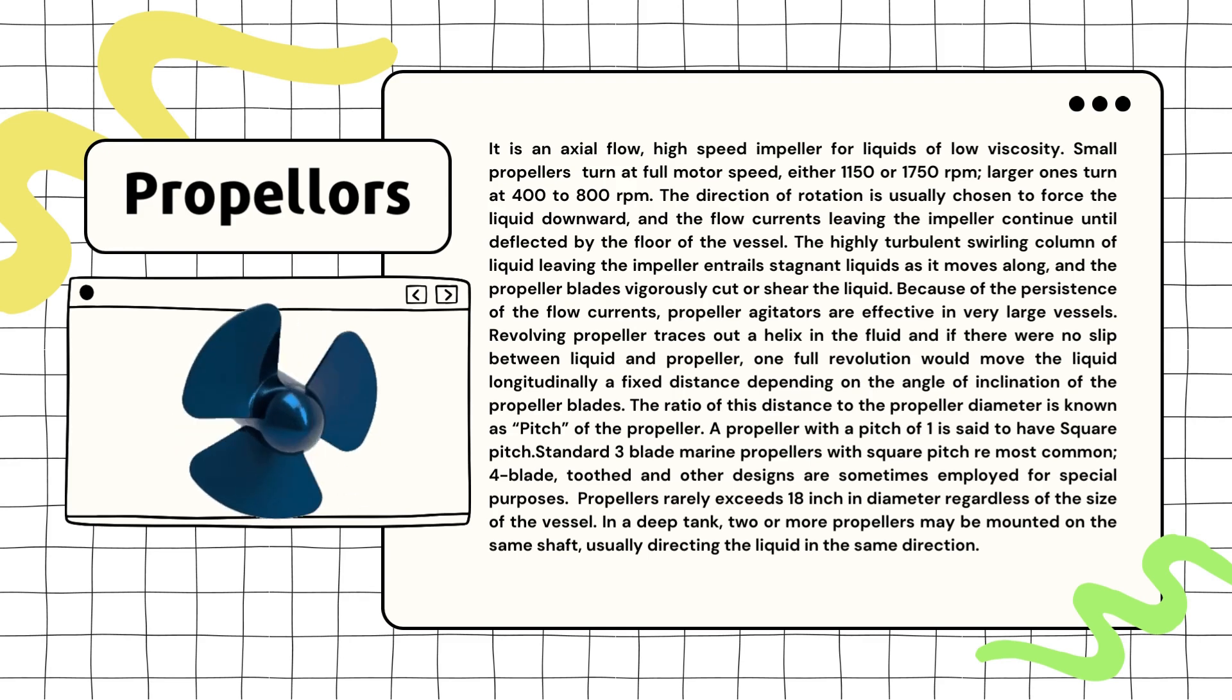The swirling flow of this liquid continues until it hits the bottom of the container. As this swirling liquid moves along, it pulls the stagnant liquid around it. The blades of the propeller also chop up or shear the liquid into small pieces. These propeller agitators are really effective in very large containers because the swirling flow persists for a longer period.